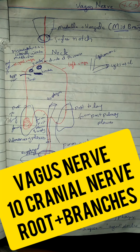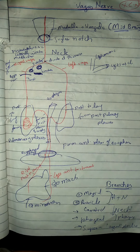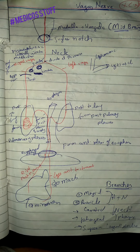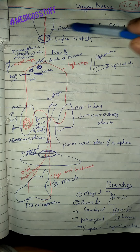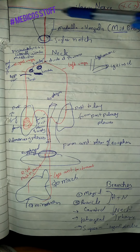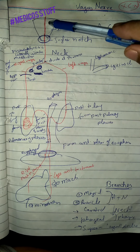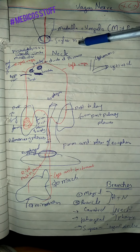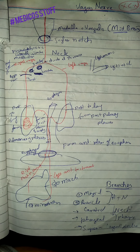Today our topic is the vagus nerve, the 10th cranial nerve. We will study the roots of the right and left vagus and also the relations of the vagus nerve. The vagus nerve arises from the medulla oblongata and runs downward through the jugular notch and then into the neck.